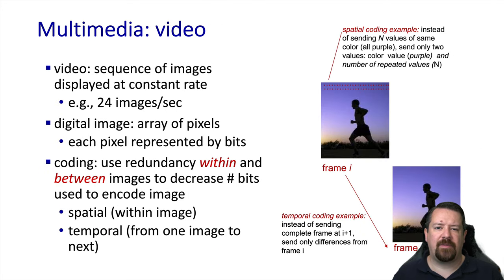A little bit about video. A video is just a sequence of images, and they're displayed at some constant rate. 24 frames per second is typical for cinematic content, with 30 frames per second being the typical standard for television content. With online streaming becoming the norm, those conventions are less and less meaningful. But still know that for each video, there is an associated frame rate which remains constant during the duration of that video.